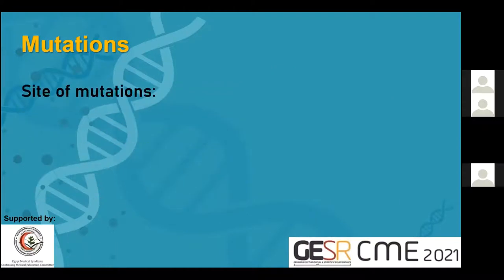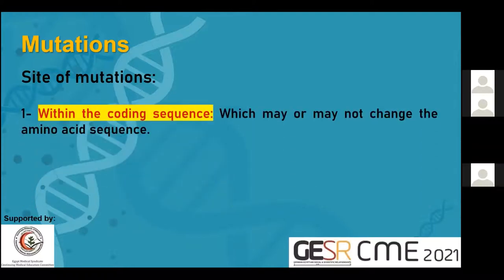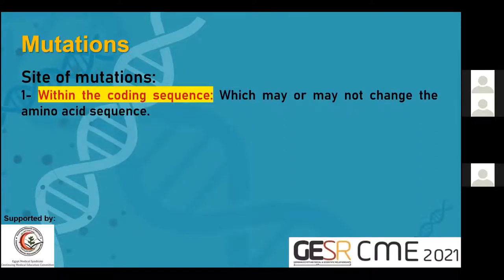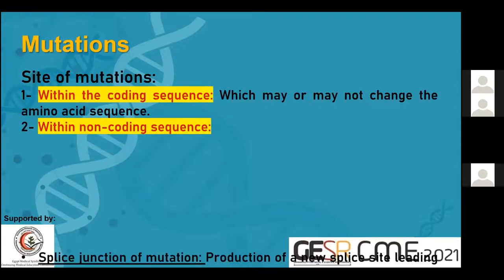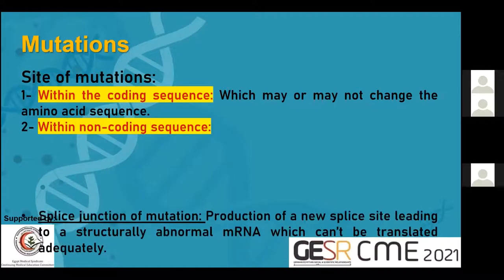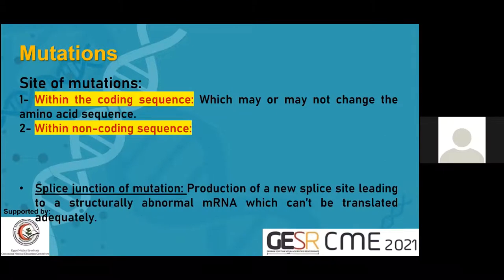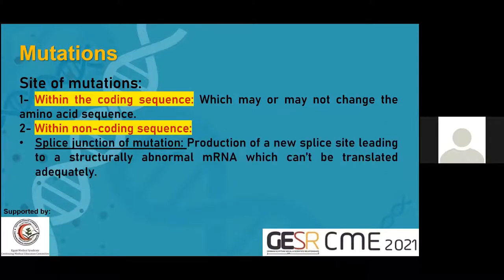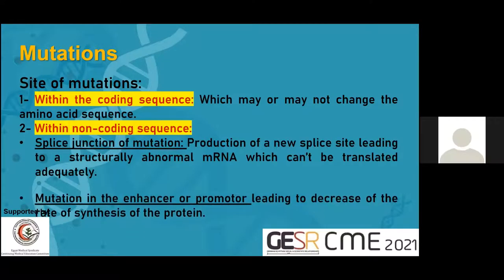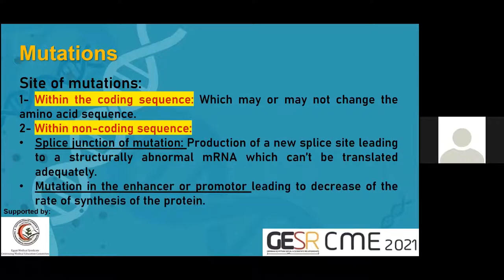The site of mutations may be within the coding sequence, which may or may not change the amino acid sequence, or within the non-coding sequence. This may be at the splice junction, leading to production of a new splice site, or a mutation in the enhancer or the promoter, leading to a decrease in the rate of protein synthesis. These are the sites of mutation, whether in the coding sequence or in the non-coding sequence.